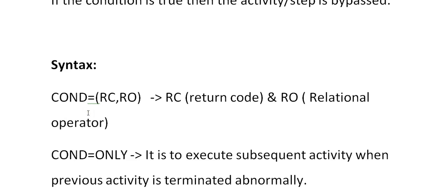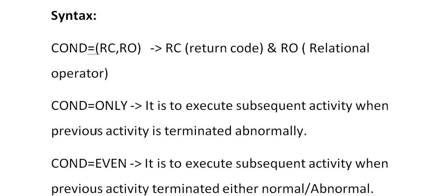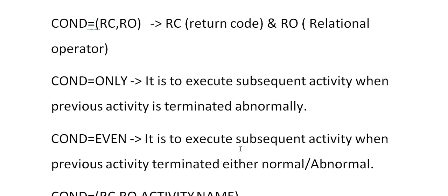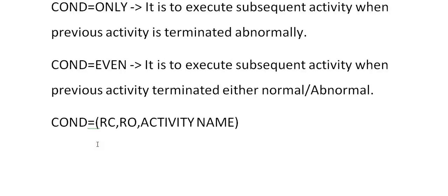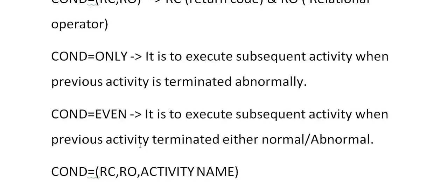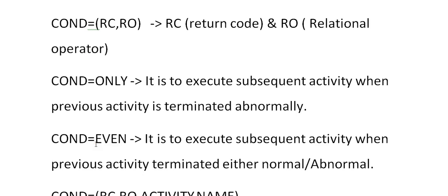There are four ways of representing the COND parameter. One is COND equal to return code and relational operator. Another is COND equal to ONLY, which means it is to execute subsequent activities when previous activities terminated abnormally. Or COND equal to EVEN, which executes subsequent activity when previous activity terminated either normally or abnormally. The fourth is COND equal to return code, relational operator, and an activity name.